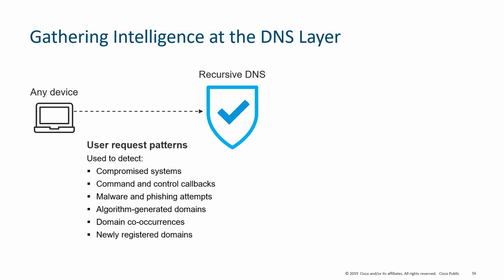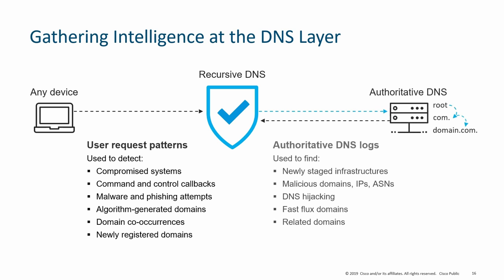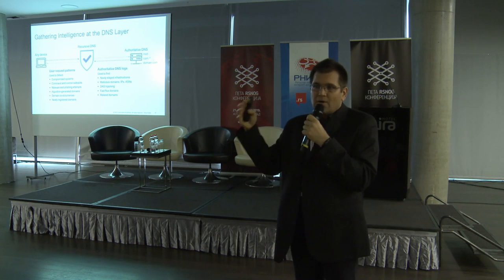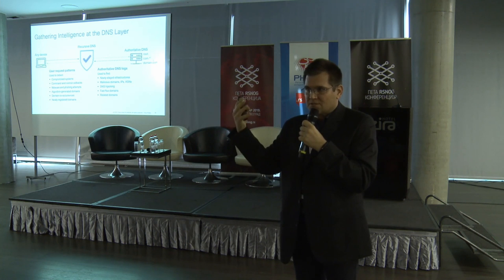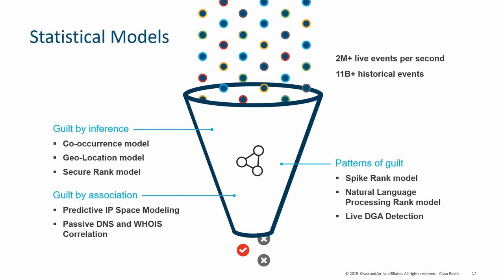What Umbrella does is provide recursive DNS services. If there is a home user or PC, you just point the DNS request to these services and it provides DNS resolution plus additional security countermeasures and controls. For example, it blocks DNS hijacking and fast flux domains - where IP addresses change very rapidly behind a given domain, which is highly suspicious and not a valid service. There are a lot of different algorithms.